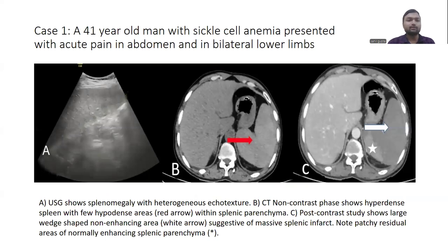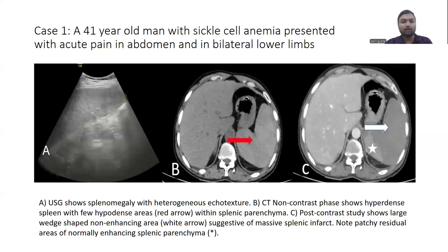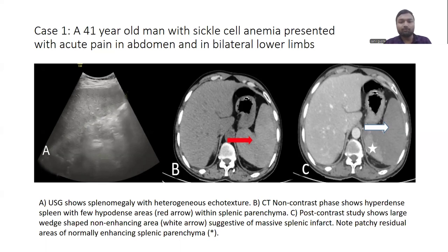Coming to the cases — first case: a 41-year-old man with known sickle cell anemia presented with acute pain in the abdomen and bilateral lower limbs. Ultrasound showed splenomegaly with heterogeneous echotexture. Non-contrast CT showed a hyperdense spleen with few hypodense areas within the splenic parenchyma. On contrast study, there was a large wedge-shaped non-enhancing area suggesting splenic infarct, with patchy residual areas of normally enhancing splenic parenchyma.